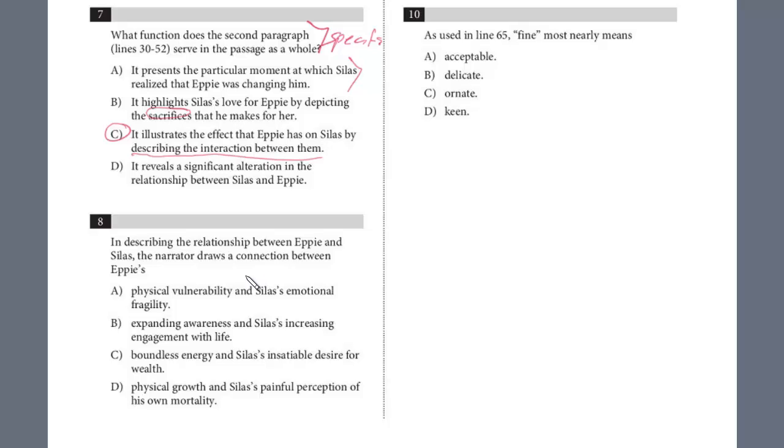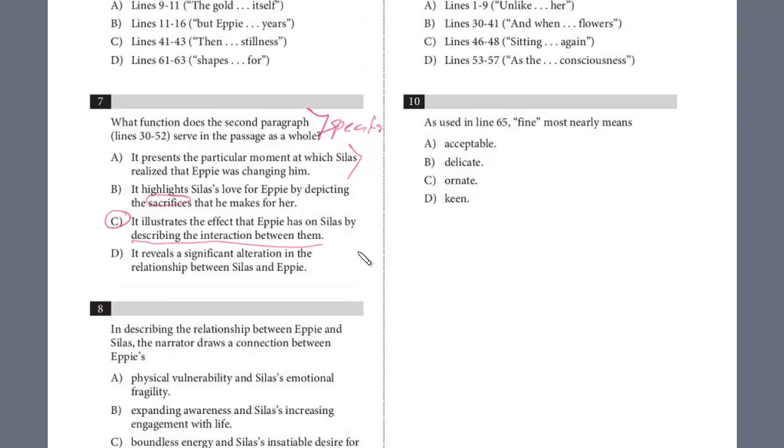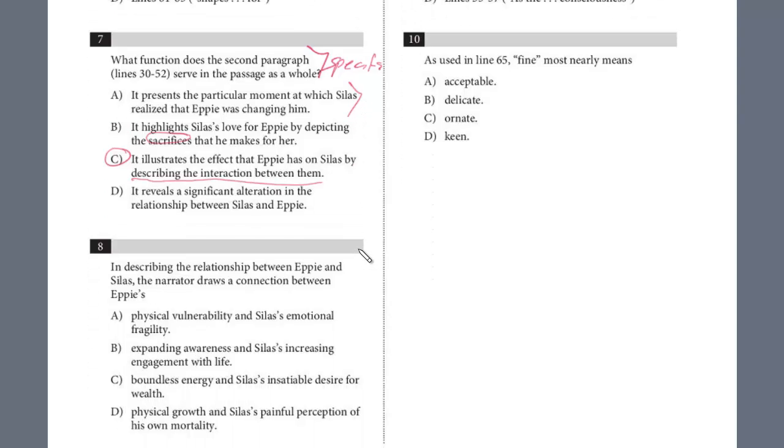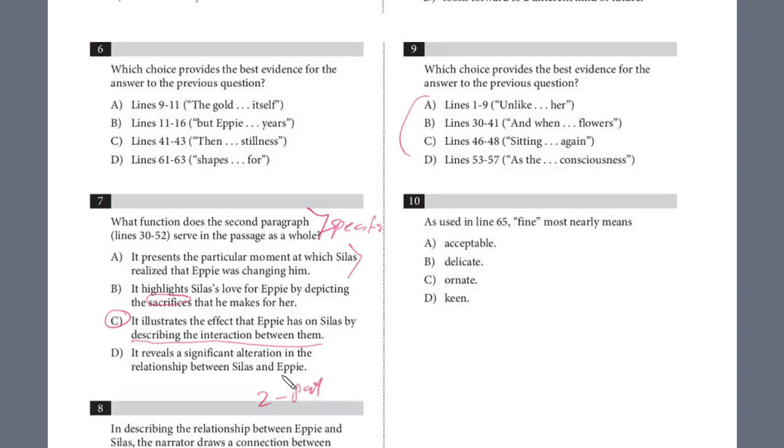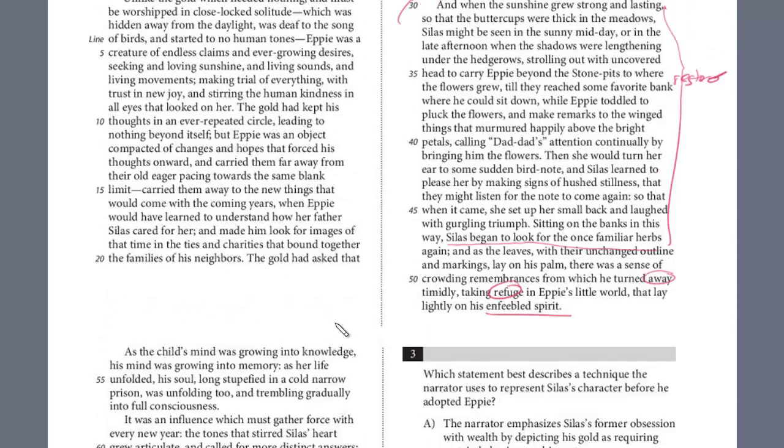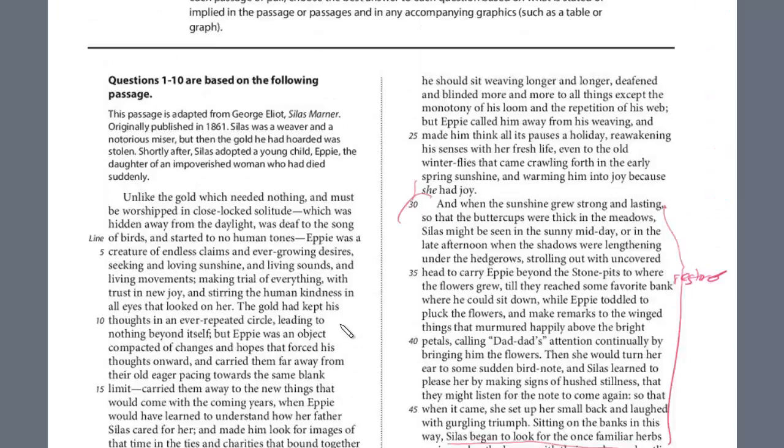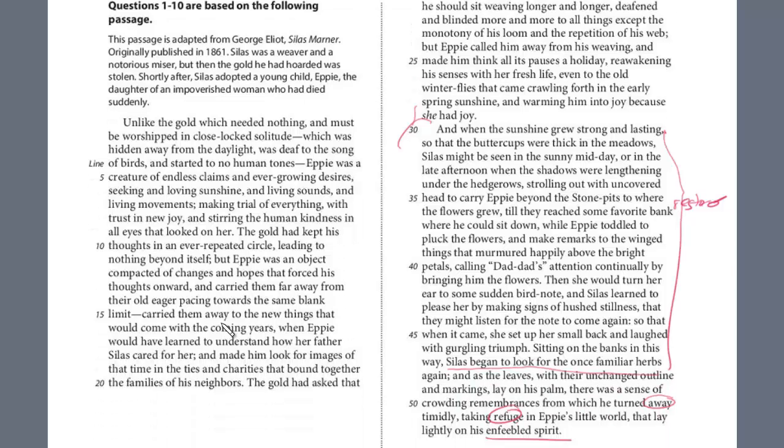All right, let's take a look at 8. And let's see, 8 and 9. I'm just going to go back. This is a two-part question. So always get in the habit, we'll scan at the next question. If it's a two-part question, you want to independently find the evidence and then answer it. And so let's read the question for 8. In describing the relationship between Eppie and Silas, the narrator draws a connection between Eppie's what? And we know that the answer will be between, it's really almost the whole paragraph, between lines 1 and 57. So we're really looking for detail describing the relationship. After you've answered a few of these questions, I think you have a much better idea of what this passage is about. In the beginning, it's just giving detail and sort of narrating what happened. And we already read paragraph two, the interaction.